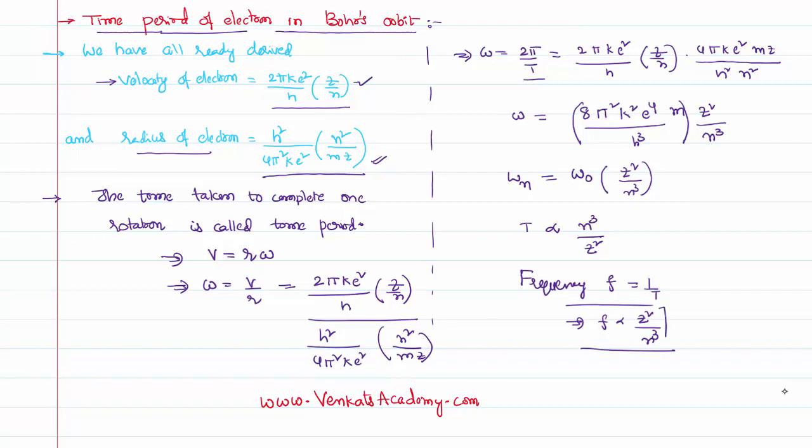Thus we are able to figure out the equations for time period and frequency. Being the other terms are constants, we can say time period is directly proportional to the cube of the principal quantum number and inversely proportional to the square of the atomic number. That's it, thank you for watching.